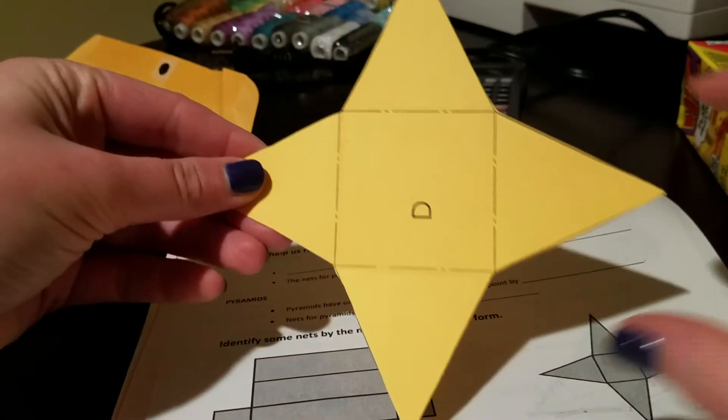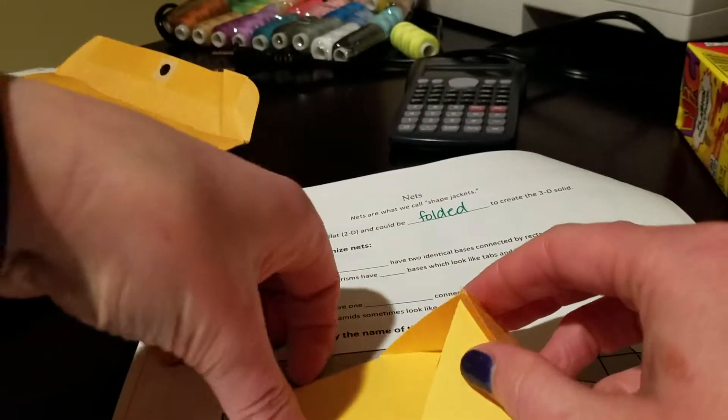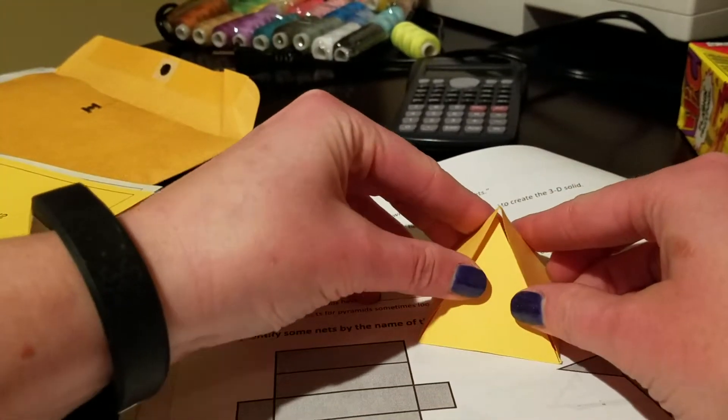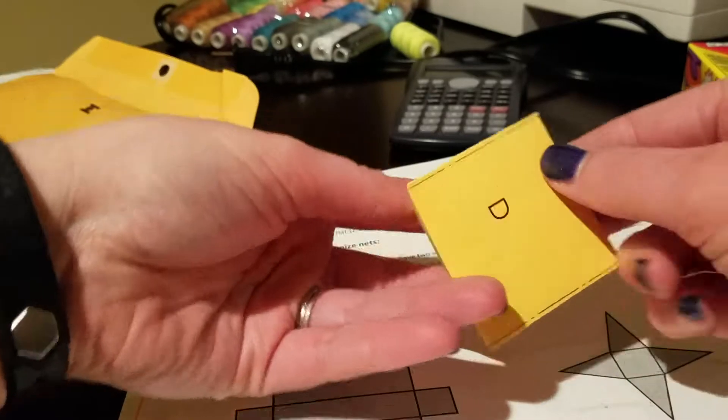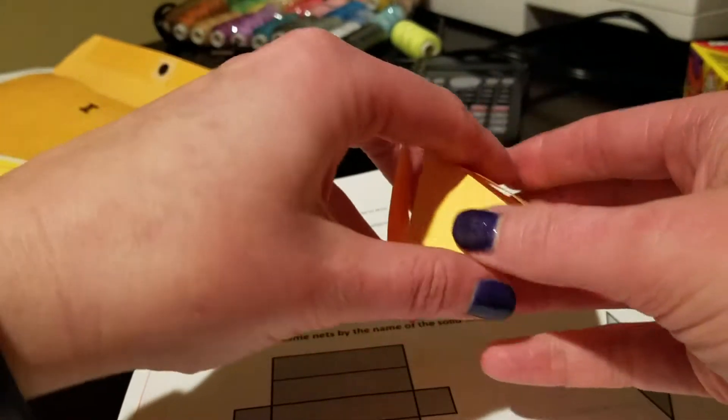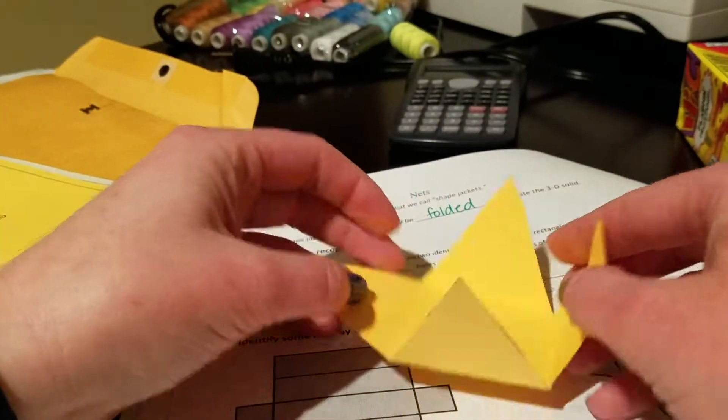So for example, this is a net. If you take this and you fold up those sides, you can actually visualize and see that we actually have a pyramid, and it has a D. It has a square base here. D is just for my purposes. So it has a square base, so this would be called a square pyramid.